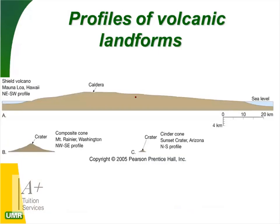This profile of Mauna Loa in Hawaii shows the sea on both sides forming a small island. The caldera and vent are at the top, and it continuously flows runny pāhoehoe lava to the sides.